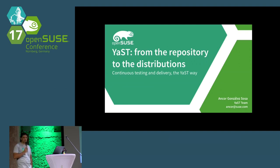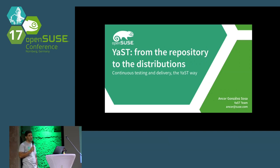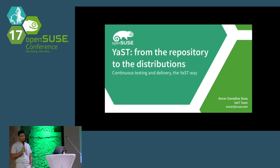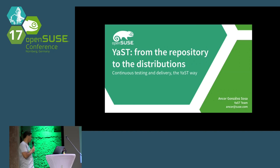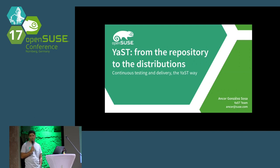Continuous delivery is a trendy topic in the software industry. The whole point is to deliver new features and bug fixes to your final users as fast as possible compared to when the feature is written by the developer. This is actually a very familiar concept to free software because we usually have the mantra of "release early, release often." It's especially true in the OpenSUSE project since we have Tumbleweed, our rolling distro, which is actually an extreme example of continuous delivery.